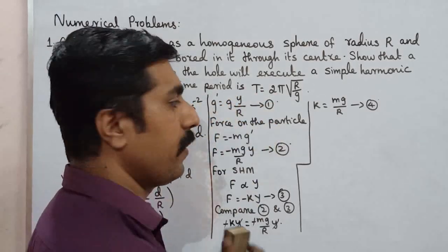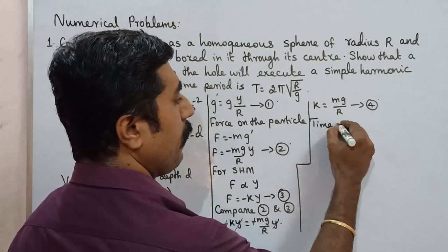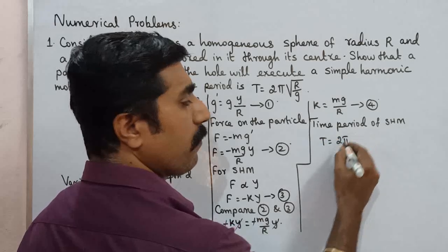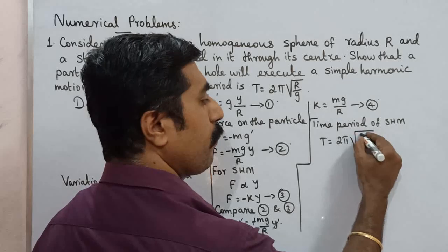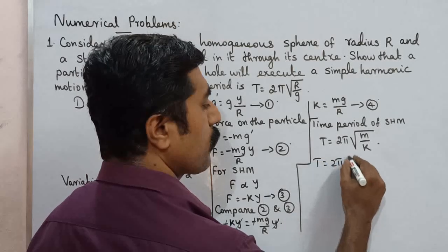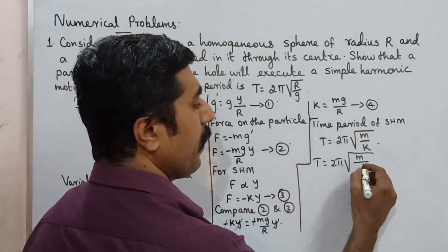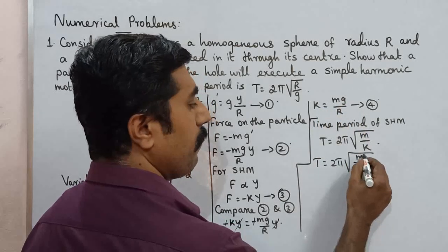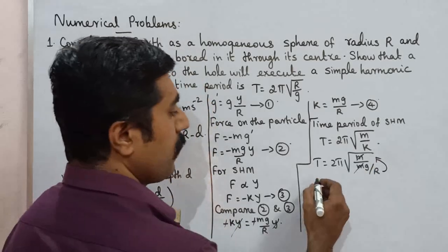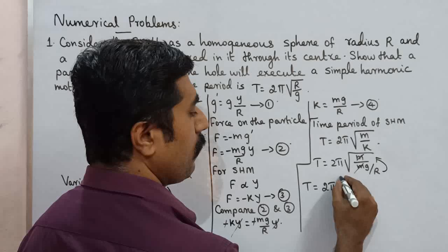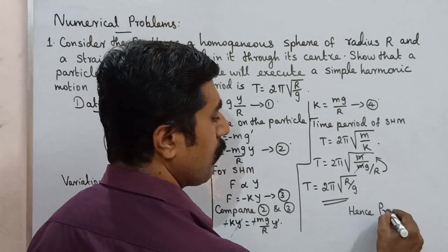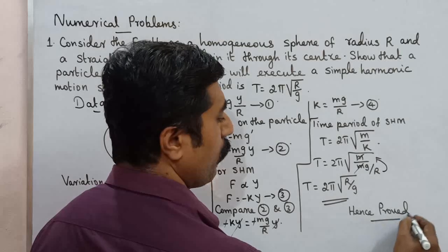Time period of SHM: T is equal to 2 pi into square root of M by K. Substituting K equals M G by R, the M terms cancel. So T is equal to 2 pi into square root of R by G. Hence proved.